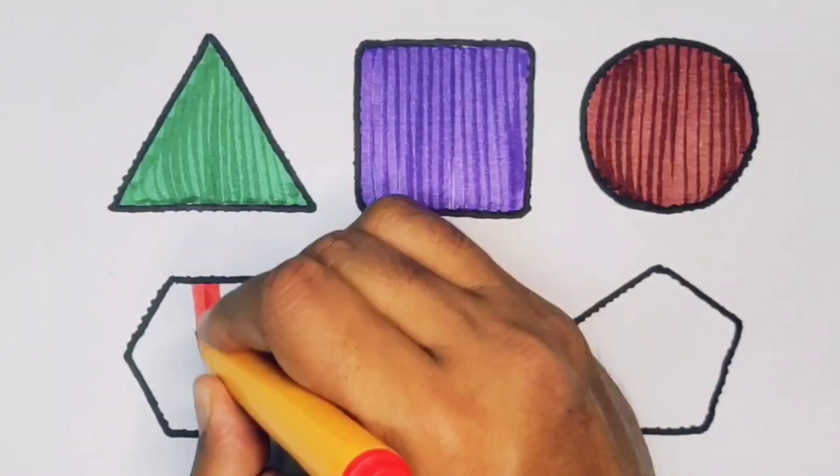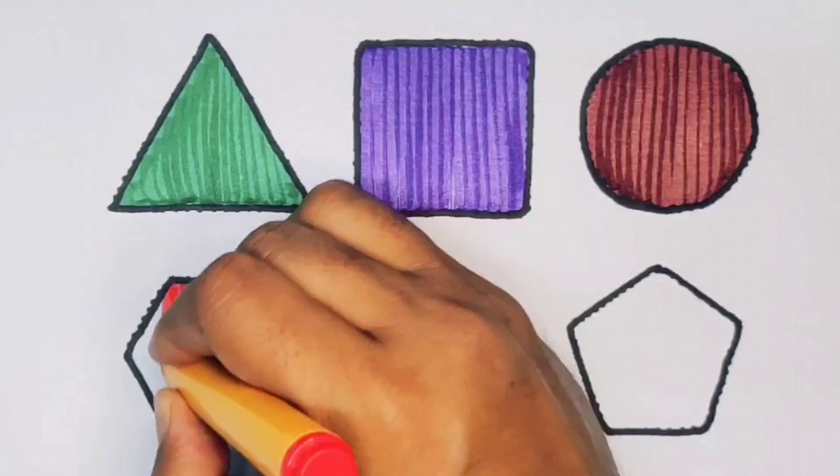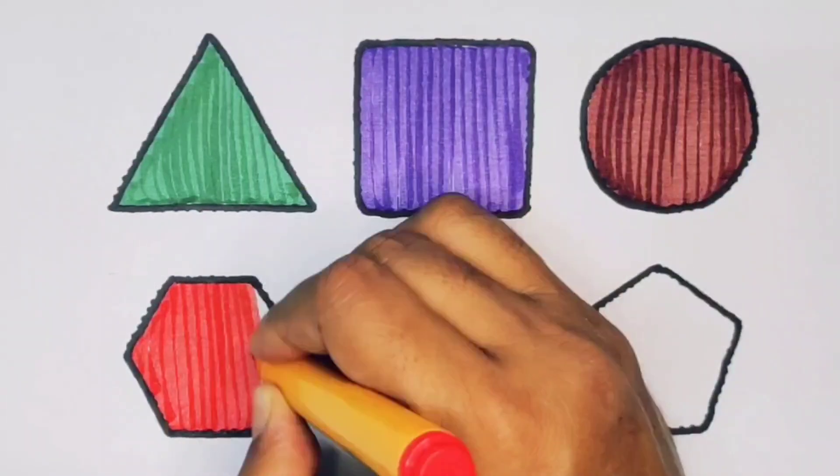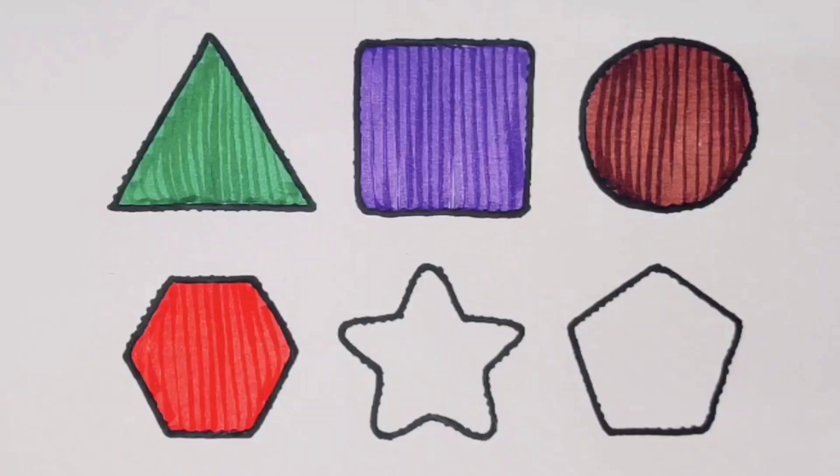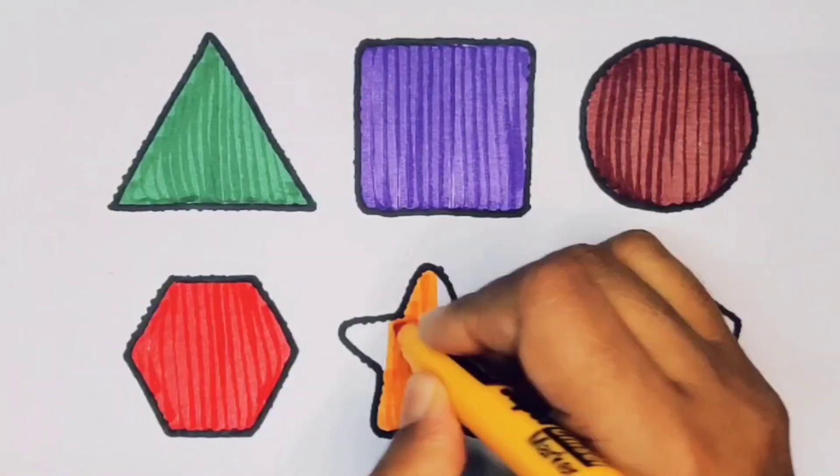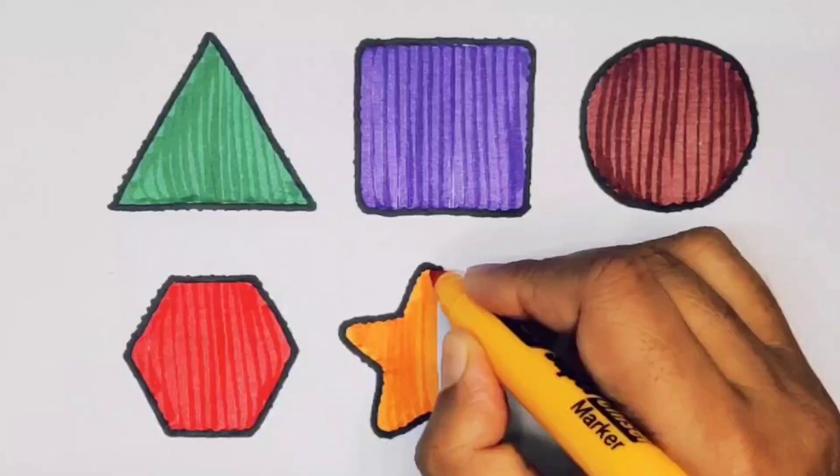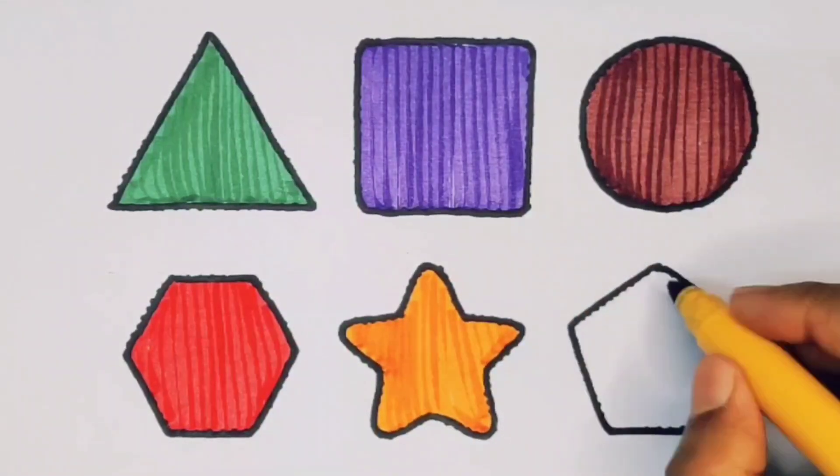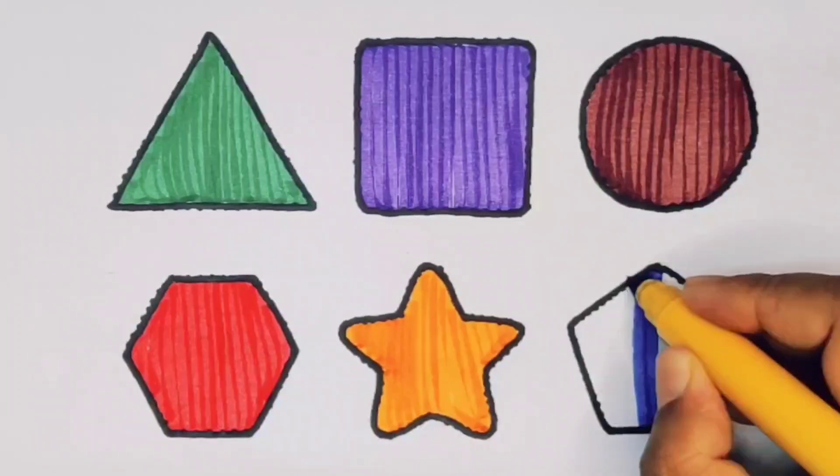Red color for the hexagon. Orange color for the star. Blue color for the pentagon.